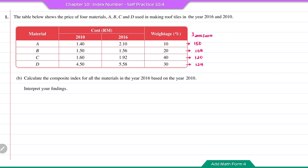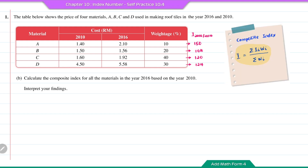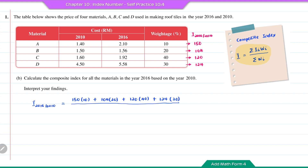Question B: calculate the composite index for all the materials in the year 2016 based on the year 2010. Using the price indices from question A: (150×10 + 104×20 + 120×40 + 124×30) divided by the total weightage. After calculation, this gives 12100 ÷ 100. So the composite index is 121.